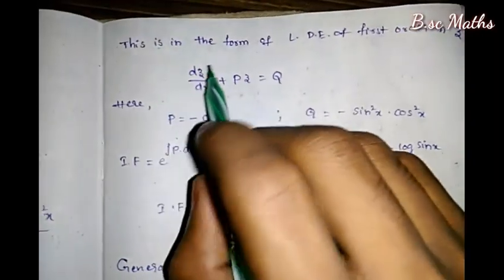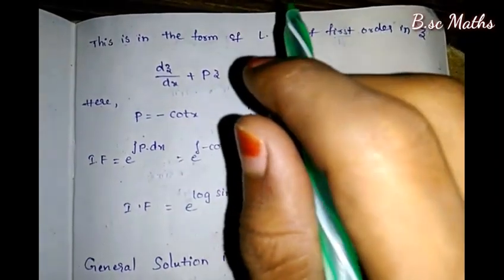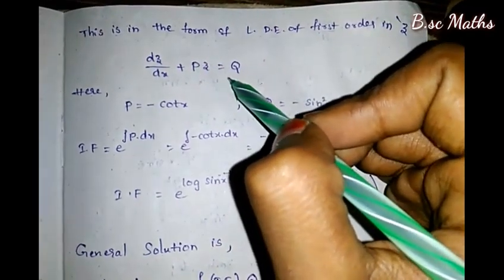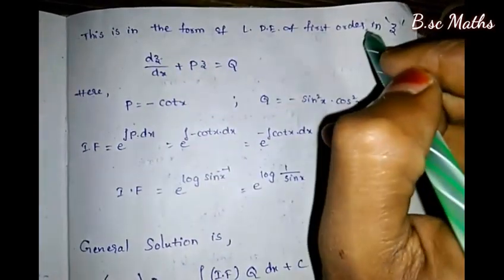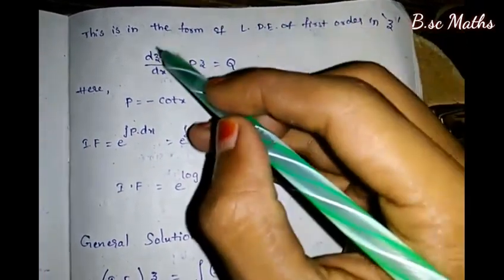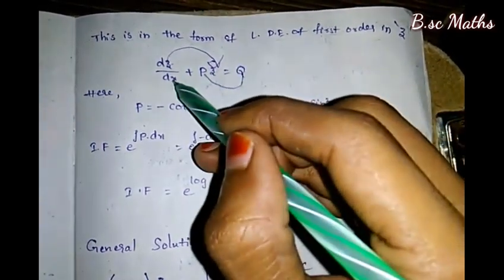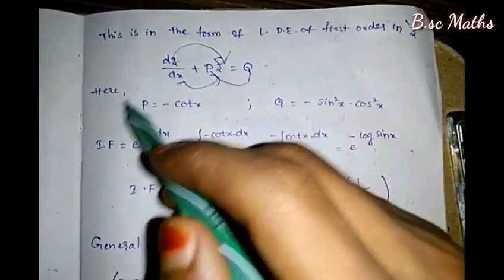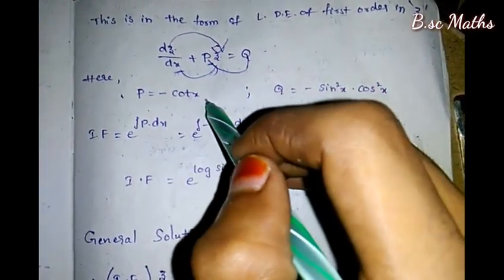This is in the form of a linear differential equation of first order in z: dz/dx + P·z = Q. Here the P value is minus cot(x), and Q value is minus sin²x·cos²x.